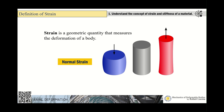Strain is a geometric quantity that measures the deformation of a body. The gray object in the figure is not subjected to any force. If subjected to a compressive force, the length shortens. If a tensile force is applied at the centroid, the object elongates. When there is a change in length, there is strain, which is the amount of deformation of the body.